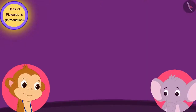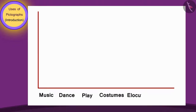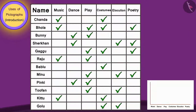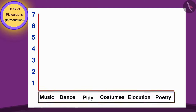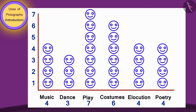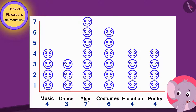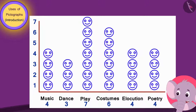Appu saw Babban's table and drew two lines on a paper. He first wrote down the names of all the programs near the lower line. Then Appu once again looked at Babban's table and made some symbols of faces on top of the names of each program, and told Babban that he can find out how many children have participated in each program with the help of this pictograph.